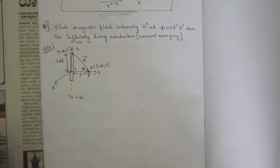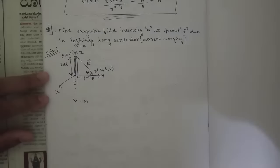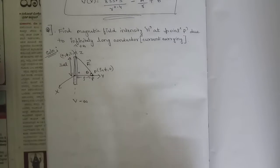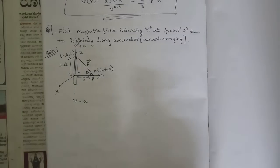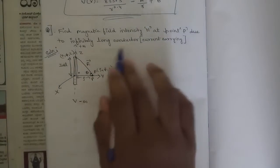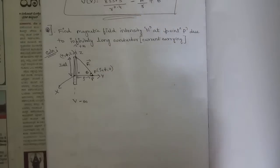Hello everyone, welcome to this new session. In this session we are going to be solving one important problem which is related to Biot-Savart's law — only one problem in this session and it's a very important problem. The question is: we need to find the magnetic field intensity H at point P due to an infinitely long current carrying conductor.